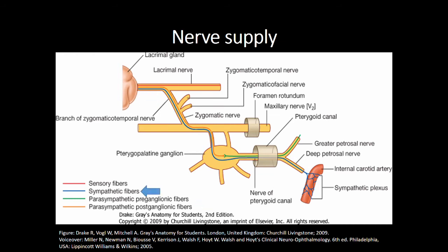Sympathetic fibres, which suppress lacrimation, travel through the internal carotid artery plexus to merge with the deep petrosal nerve. The fibres then follow the vidian nerve to the pterygopalatine ganglion, wherefrom they follow a similar pathway to the parasympathetic fibres.